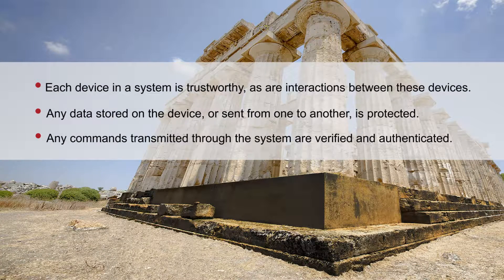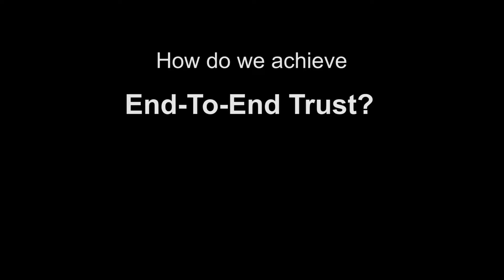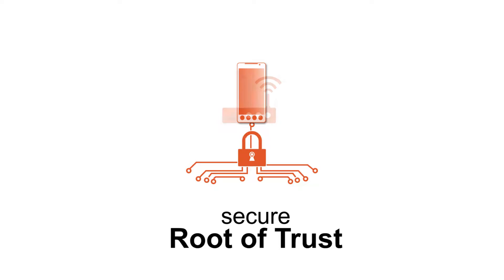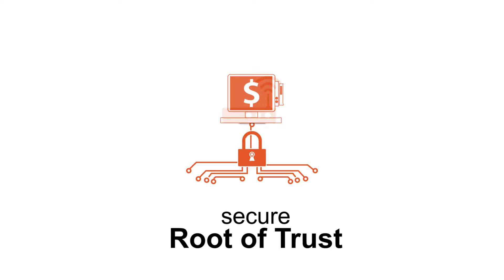This is only possible if security is at the very foundation of the device. In other words, security is built in, not bolted on. Achieving end-to-end trust starts with implementing a root of trust — it is essential in a secure system and is perhaps the single most important factor in establishing device integrity.